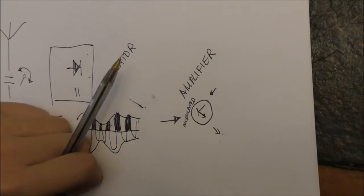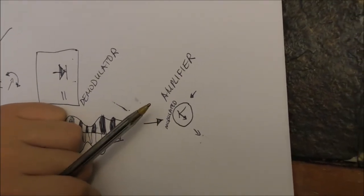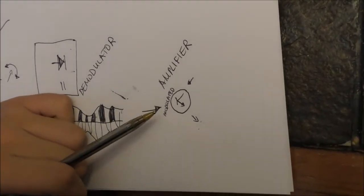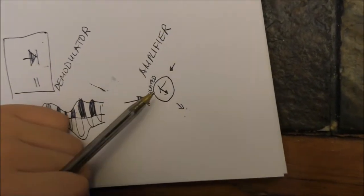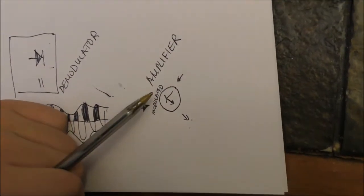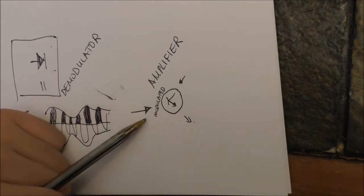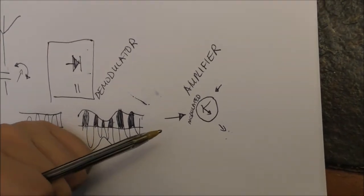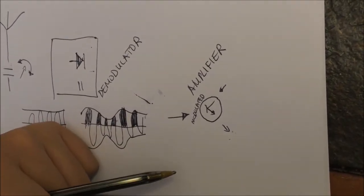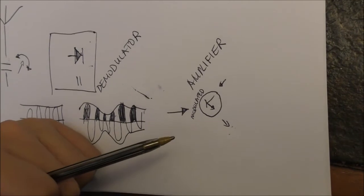After we put our signal through the demodulator, it's ready to go through an amplifier. The heart of this amplifier is a transistor. A transistor takes a very strong constant signal, and then it combines that signal with our very weak modulated signal that we have received with our antenna, and it's gone through the rest of the radio. And then it combines those two signals to make a strong and modulated signal.